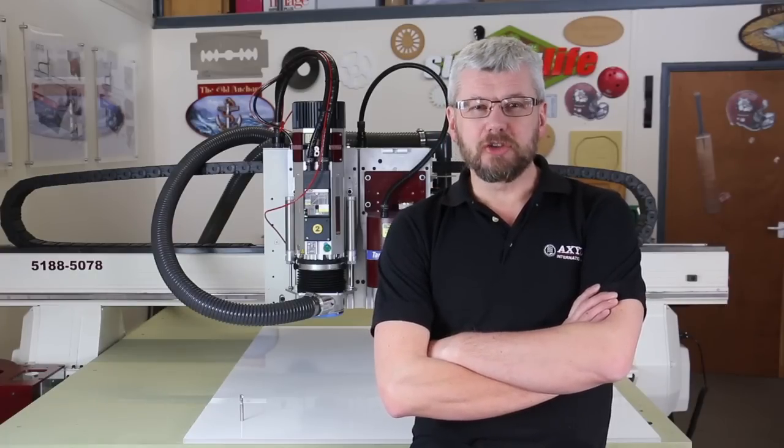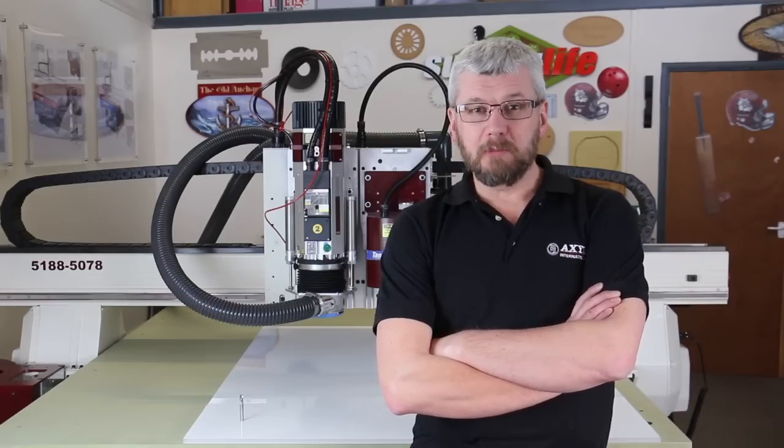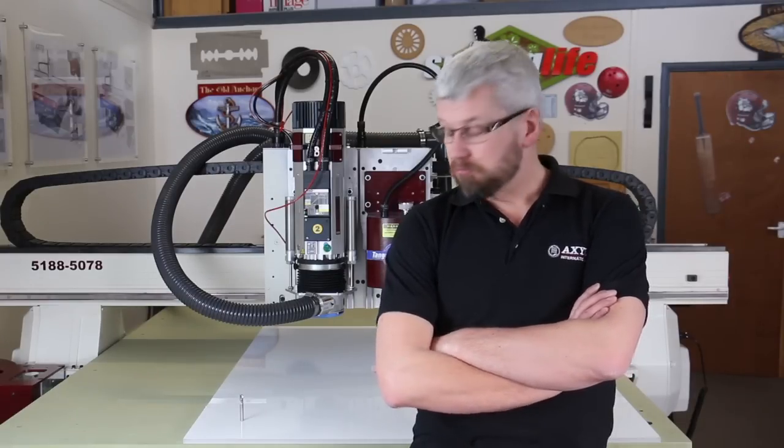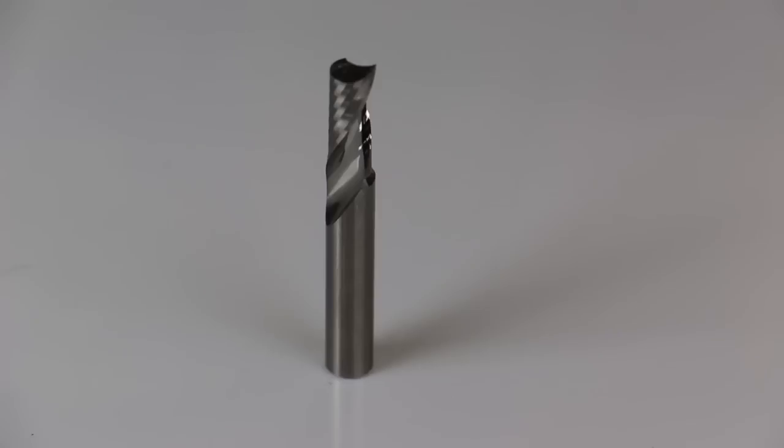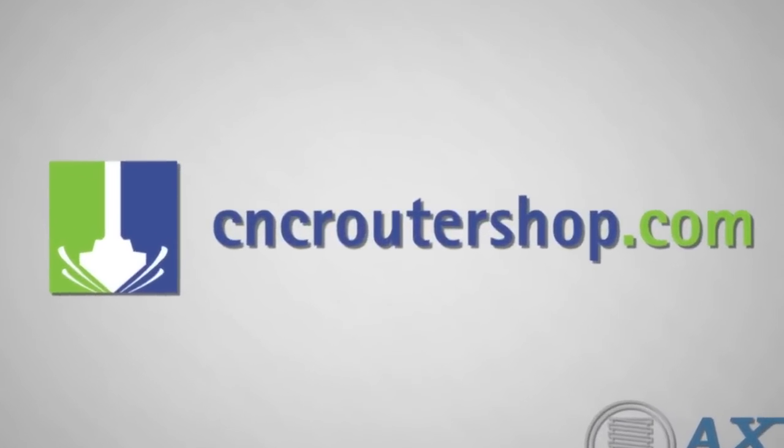We are continually testing new and different types of cutters for acrylic. We recommend a bit that has a single spiral upward flute like this one. It is precision ground for all types of plastic and is available on our CNC router shop website in a range of different diameters and lengths.